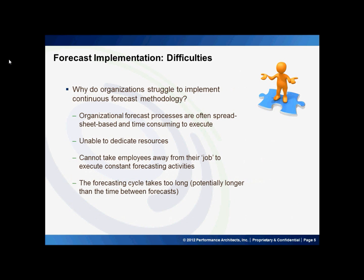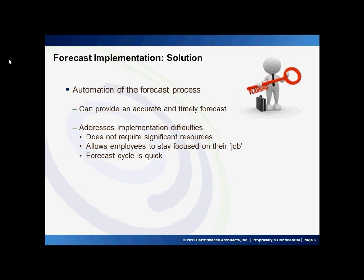So what would prevent an organization from implementing this kind of model? Why would organizations struggle to implement this process? Typically, it's because this type of continuous forecasting takes resources and it takes time, and many organizations are unable to free their employees from their operational job component to execute continuous forecasting activities. The solution is that whether you forecast to the wall or execute a rolling forecast, automating the process allows for an accurate and efficient forecast that does not require large amounts of resources or time to execute.